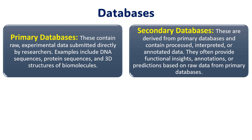We also have a secondary database. These are normally information derived from the primary databases. Whatever information is available in the primary databases — after analysis of that data — the secondary database is formed. So the data available in the primary database is analyzed, processed, and interpreted, and then we get the secondary databases.